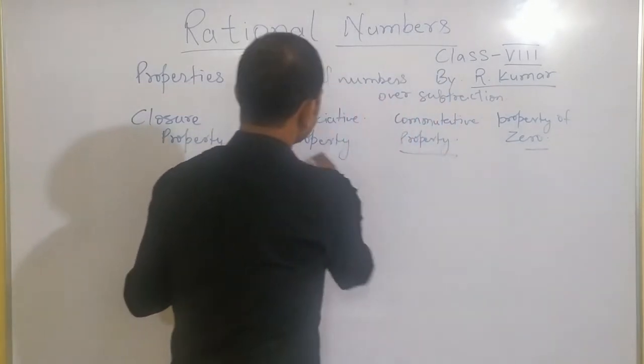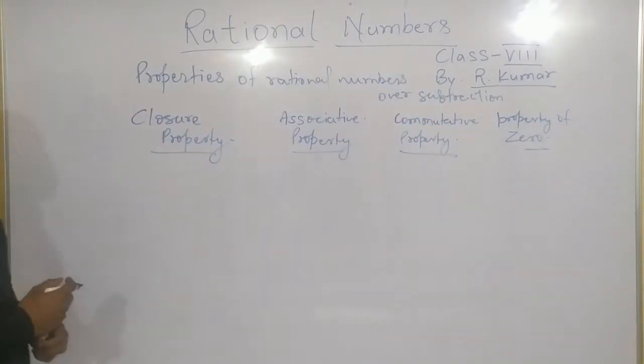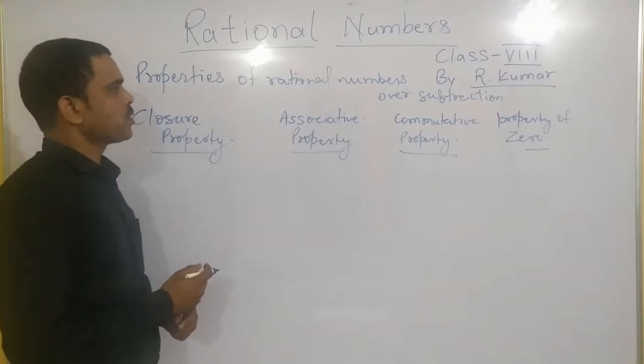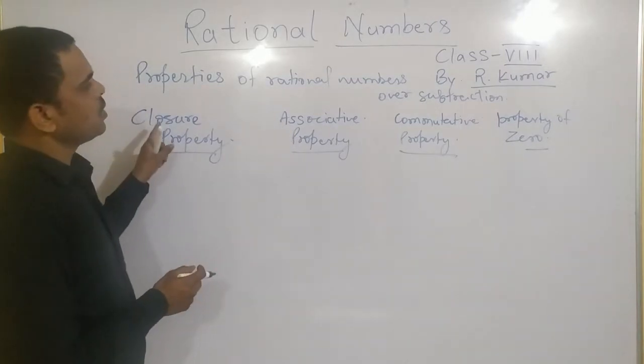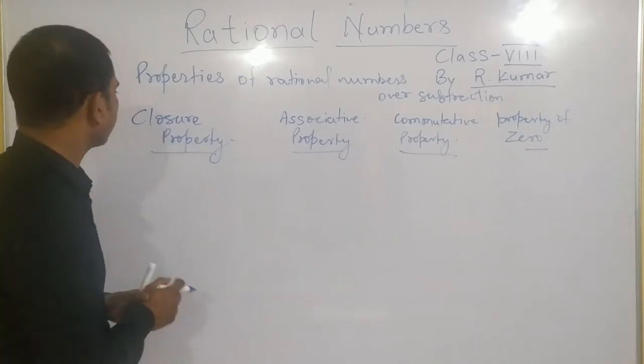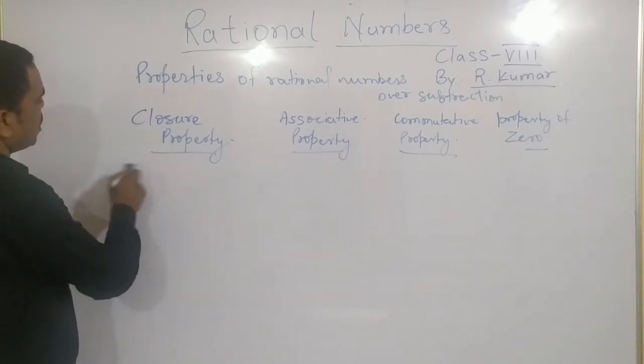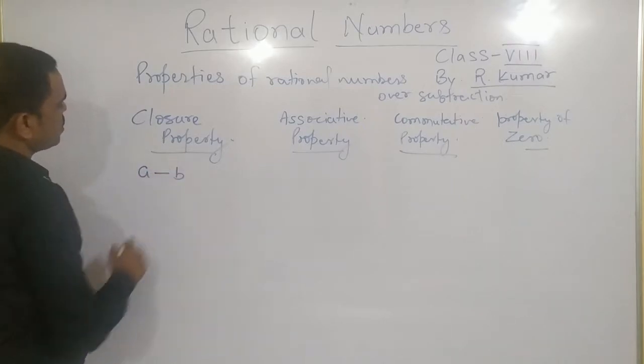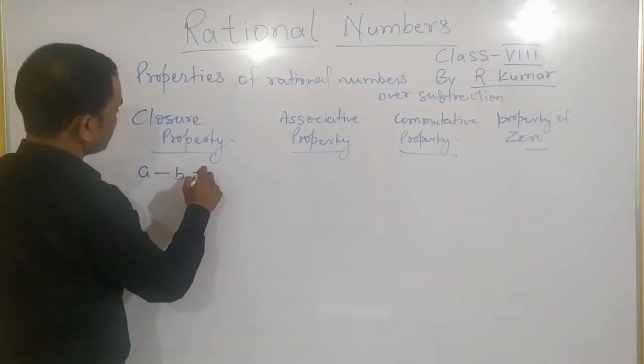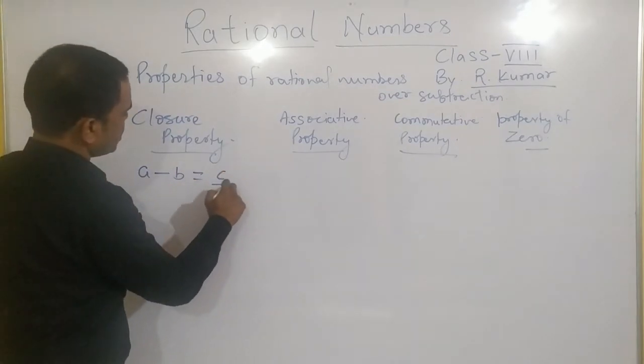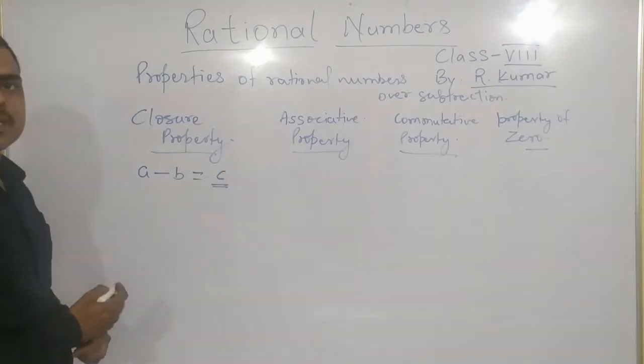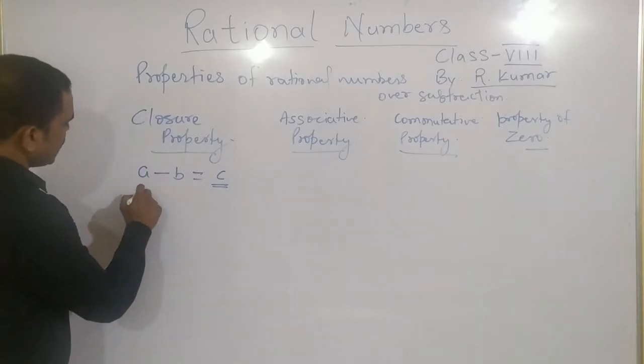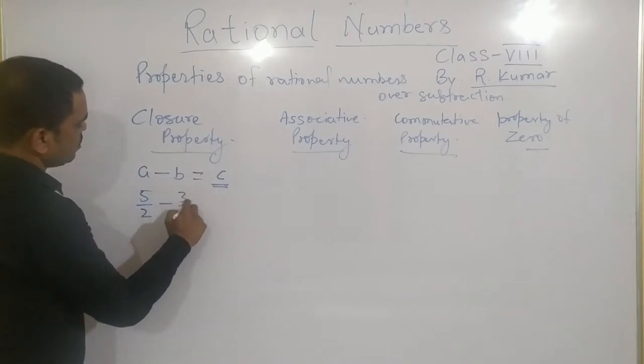One by one, these all 4 properties, with an example, we will check whether these properties satisfy over subtraction also or not. First of all I will take 2 rational numbers like A and I subtract B from it. I will check whether this C is a rational number or not. I take 5 by 2 minus 3 by 7.